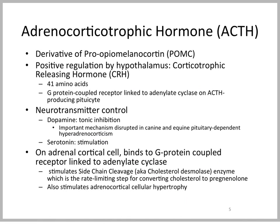ACTH is a derivative of POMC and is positively regulated by the hypothalamus via corticotrophin-releasing hormone, CRH. CRH is a 41-amino acid peptide which stimulates a G-protein-coupled receptor and activates adenylate cyclase on the ACTH-producing corticotroph of the anterior pituitary.